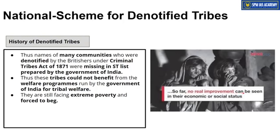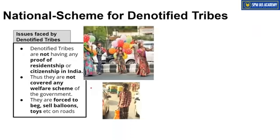Even after 70 years of independence, denotified tribes face extreme poverty with no real improvement in their lifestyle. They could not benefit at all from the welfare programs of the Government of India. Today you can still see such tribal people selling balloons by the roadside, sleeping under bridges, or begging — and most of them, if you trace their background, belong to these denotified tribes. They also lack citizenship rights and proper documents, having been identified as criminals since British times.